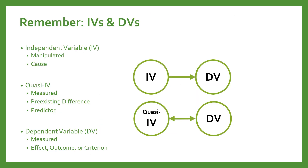As a quick review, independent variables are in experimental research. They are manipulated by the researcher, and they form the basis of different conditions that people in the study will participate in. Your quasi-independent variable is similar, but it's not manipulated. It's more of a predictor in a model — something that's measured as a predictor but isn't manipulated by the researcher. Quasi-independent variables are measured, not manipulated.